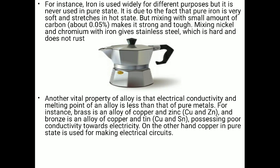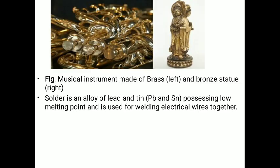An important property of alloys is that their electrical conductivity and melting point are less than that of the pure metal. For example, brass is an alloy of copper and zinc, and bronze is an alloy of copper and tin, both causing poor conductivity towards electricity. Solder is an alloy of lead and tin, possessing a low melting point and used for welding electrical wires together.